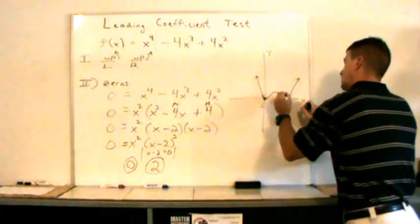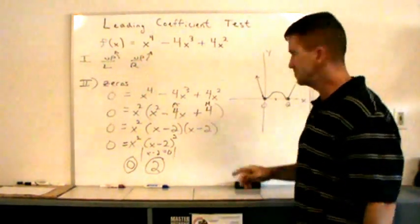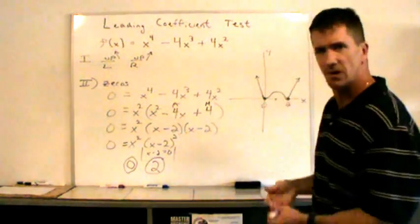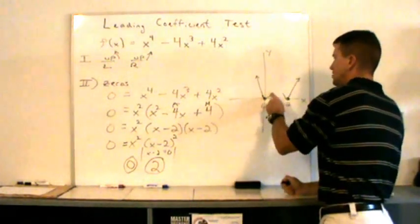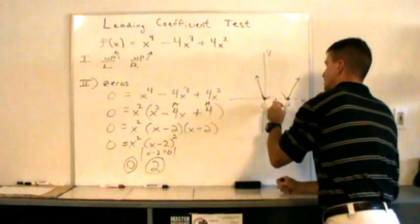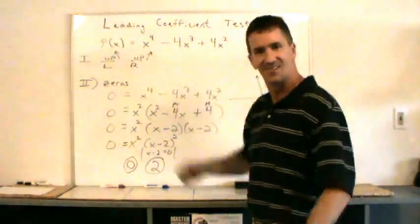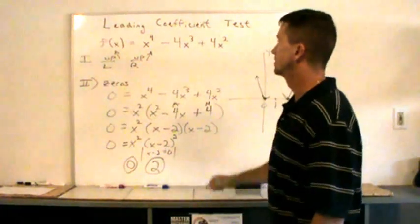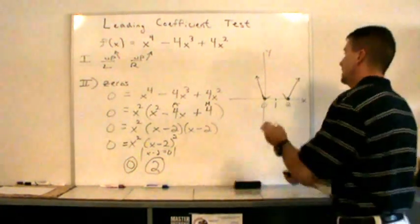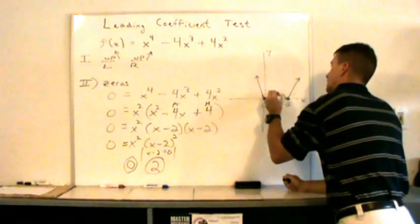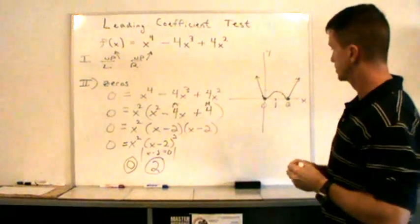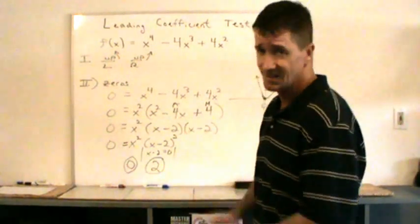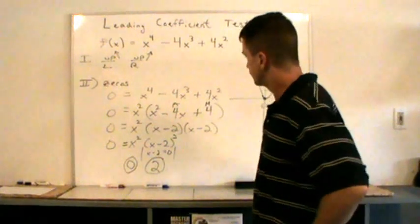Students often ask how high does the bounce get. If we want to know what value the function reaches at x = 1, we just substitute: 1⁴ - 4(1³) + 4(1²) = 1 - 4 + 4 = 1. So it reached up to a value of 1 right there. And that's what the function is doing — we made a really pretty graph with no graphing calculator needed. Of course, if you have a graphing calculator you can check this.